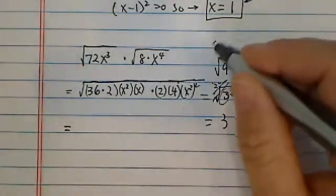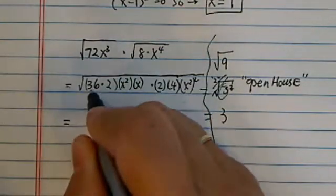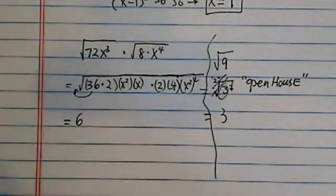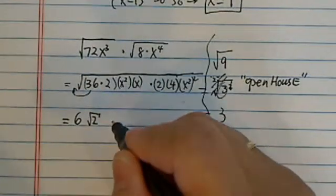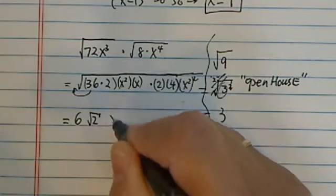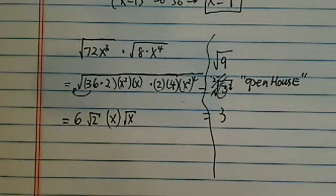So now using the rules we had earlier, every time you have a perfect square, you can open the house. So this one comes out to become a 6. Radical 2 has nowhere to go, it stays in there. Next term, this term comes out as X, but the next one doesn't have a squared term. It stays in.